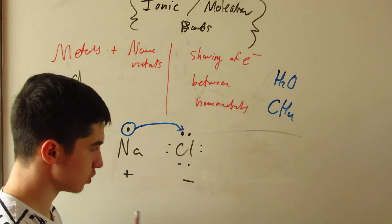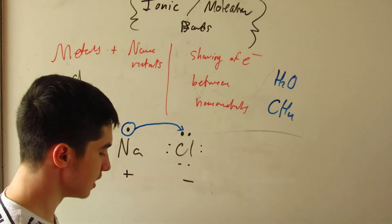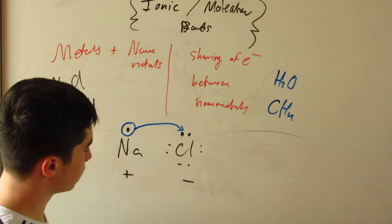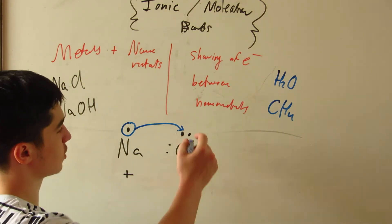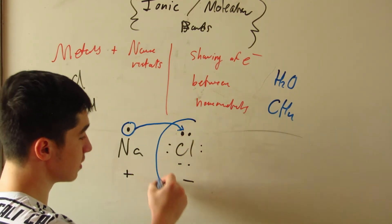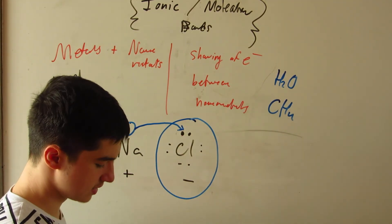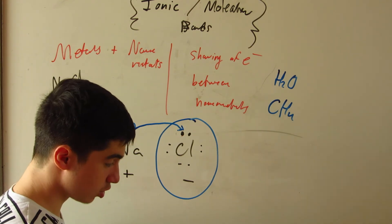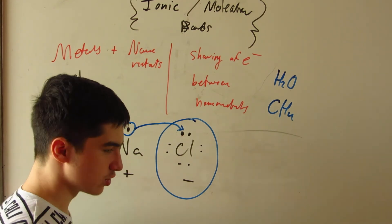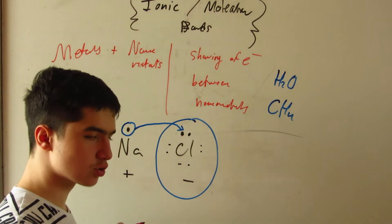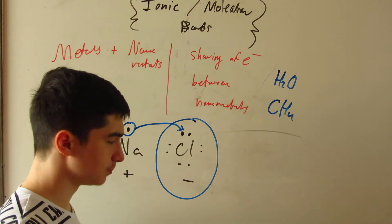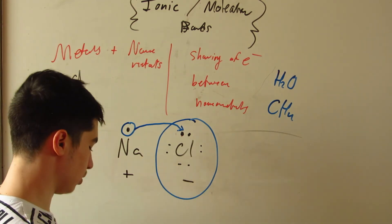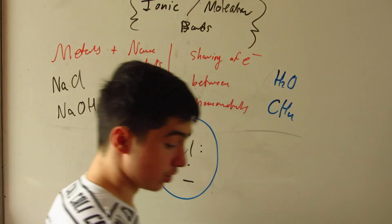So in ionic compounds, you always see definite charges — a definite negative and a definite positive — because the electrons are shifted so close to the nonmetal. Nonmetals in ionic compounds are always the greedy ones: they want that electron closer to them, which gives them that negative charge.